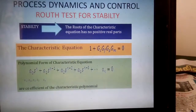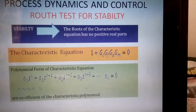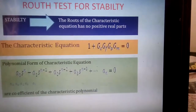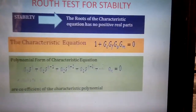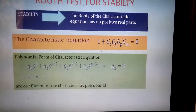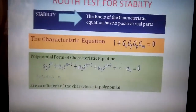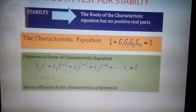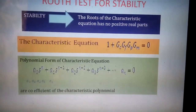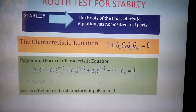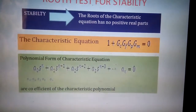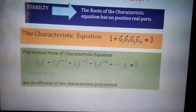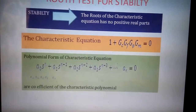Consider the characteristic equation 1 plus gc·gf·gp·gm equal to 0, where gc, gf, gp, gm are the transfer functions for the controller, final control element, process, and measuring element. We can convert the characteristic equation into a polynomial form: a0·s^n plus a1·s^(n-1) plus a2·s^(n-2) plus a3·s^(n-3) plus ... plus an equals 0. Here a0, a1, a2, a3, ..., an are called the coefficients of the polynomial.